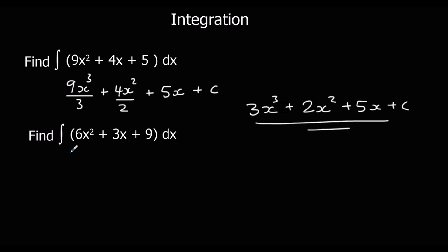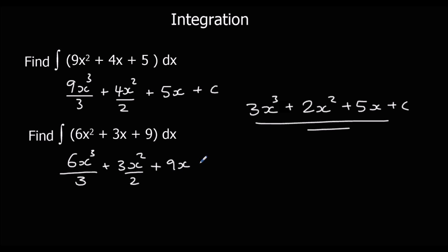Same again — follow the same process: add 1 to the power, divide by the new power, and put a plus c on the end. So we add 1 to each power and divide by the new power for each term. Simplifying: 6 over 3 is 2. 3 over 2 we can leave as 3 over 2. x squared, plus 9x, plus c.